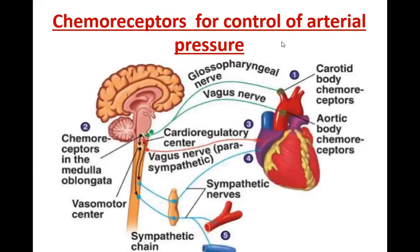Chemoreceptors for control of arterial pressure work like those of the respiratory center. Whenever there is increase in carbon dioxide, increase in H+, or decrease in oxygen — which occurs when there is stagnation of blood due to decreased blood pressure — chemoreceptors in the medulla oblongata are stimulated. The nucleus tractus solitarius will stimulate the vasomotor center (pressure area) to stimulate the sympathetic nervous system to increase heart rate, increase force of contraction, and cause vasoconstriction to increase blood pressure.